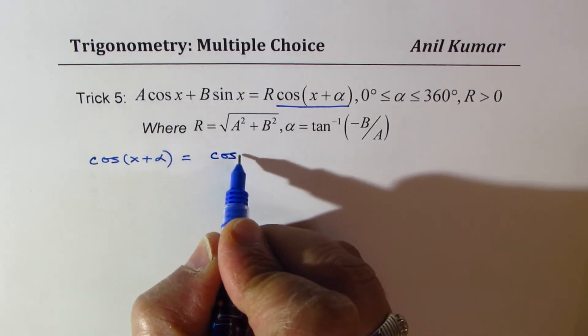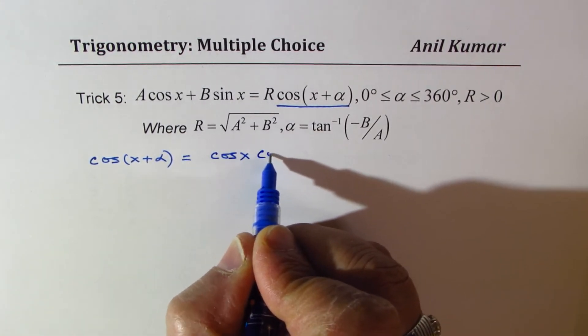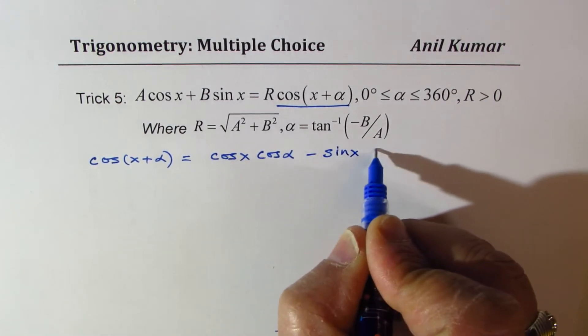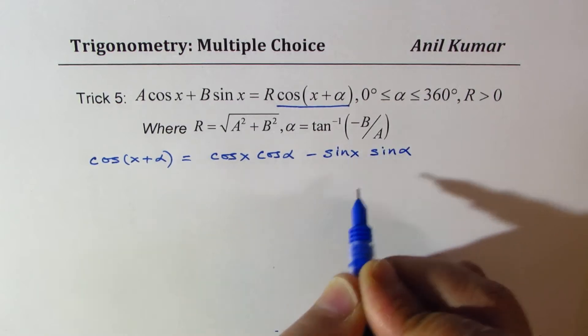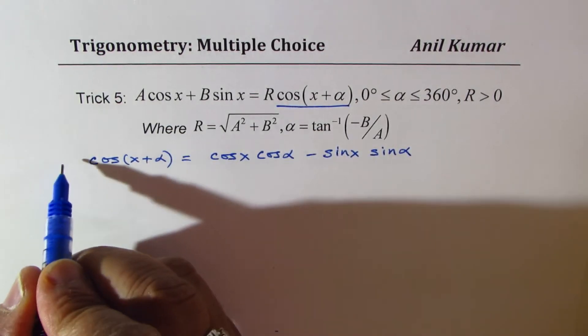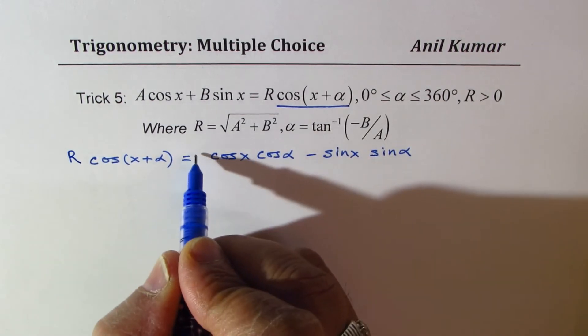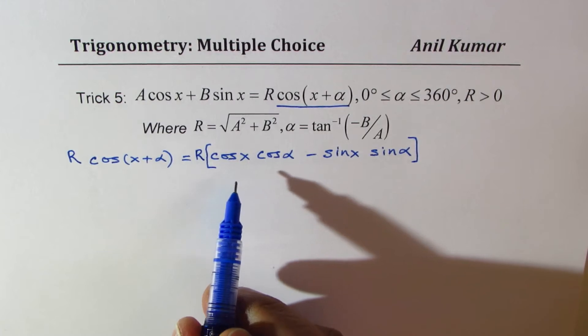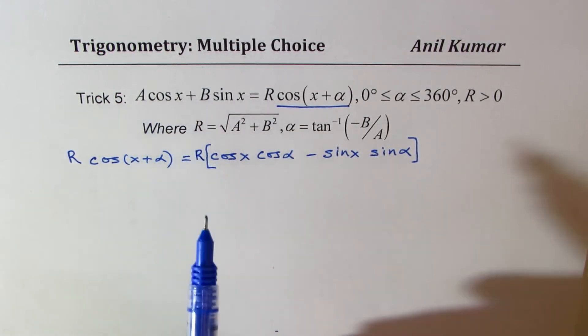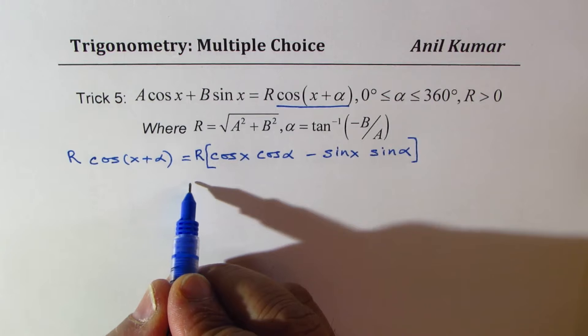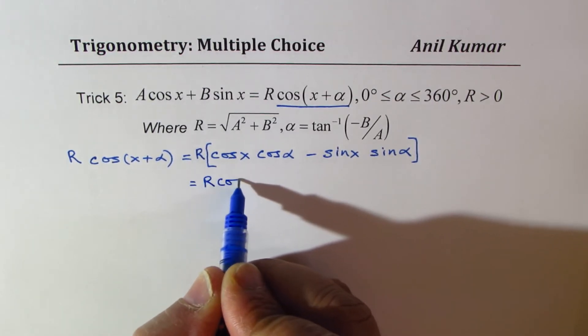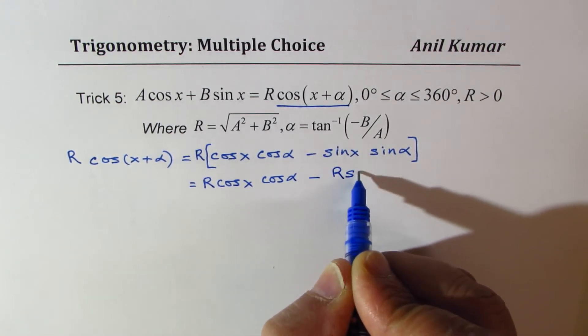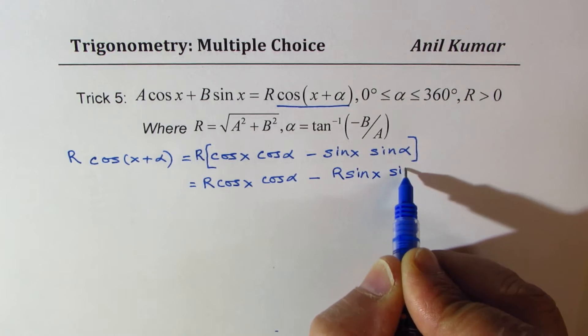I could write this as R[cos x cos alpha minus sin x sin alpha]. Let me write R common in brackets. Now if you compare with the given equation, we get R cos x cos alpha minus R sin x sin alpha.